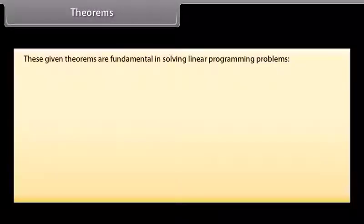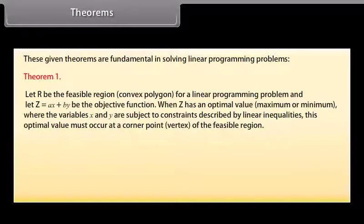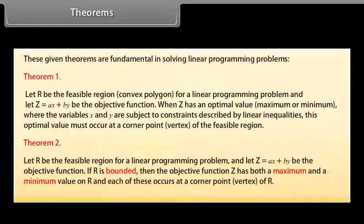Theorems: These given theorems are fundamental in solving linear programming problems. Theorem 1: Let R be the feasible region (convex polygon) for a linear programming problem, and let Z equals AX plus BY be the objective function. When Z has an optimal value (maximum or minimum), where X and Y are subject to constraints described by linear inequalities, this optimal value must occur at a corner point (vertex) of the feasible region. Theorem 2: Let R be the feasible region and Z equals AX plus BY be the objective function. If R is bounded, then Z has both a maximum and a minimum value on R, and each occurs at a corner point (vertex) of R.